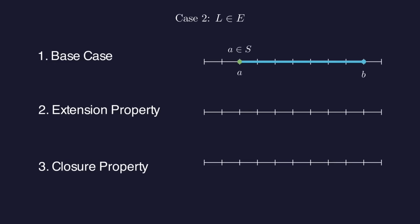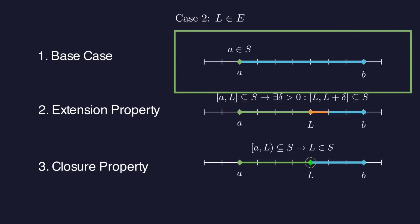So now let's assume that L is a member of E. That means that L is one of the exceptions, so it's not in S, but everything to the left of it is in S. We know that L can't be equal to A, after all our base case tells us that A is in S.